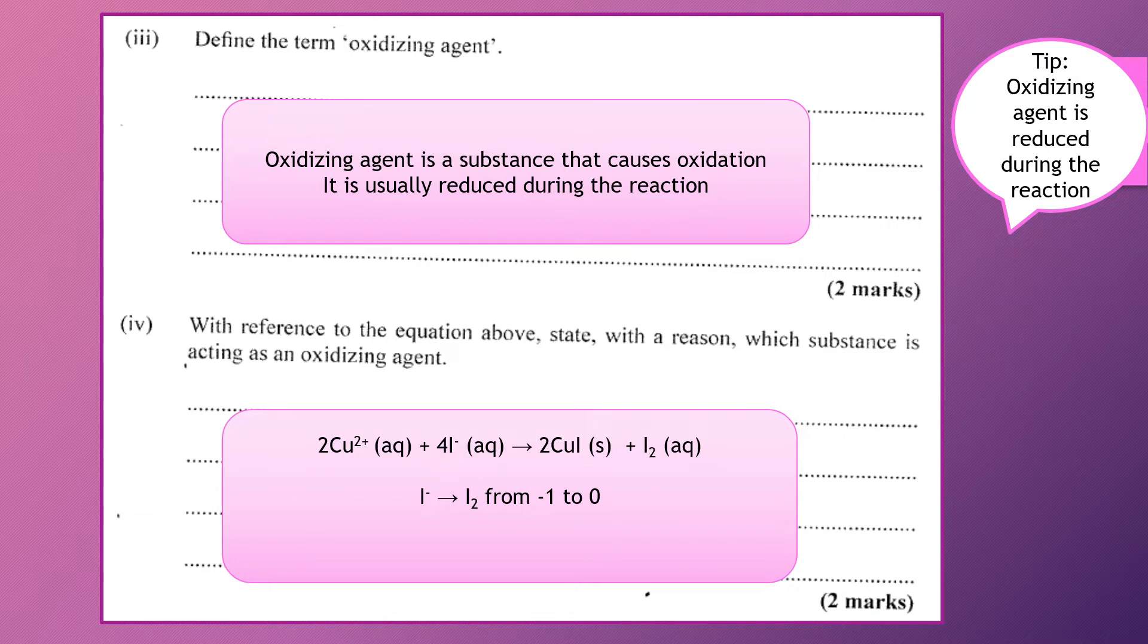For the Cu²⁺, it's moving from 2 plus to Cu plus one in CuI, so that's moving from plus two to plus one, showing that the oxidation state or the oxidation number is decreasing.